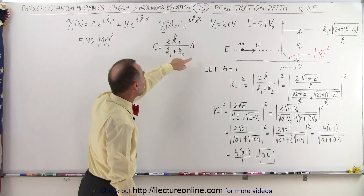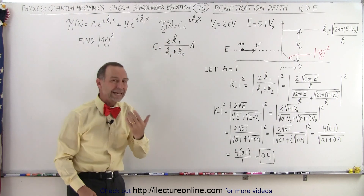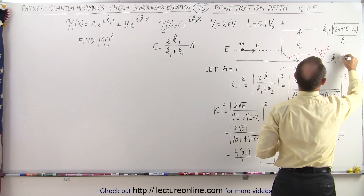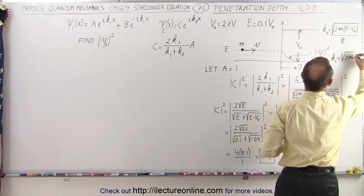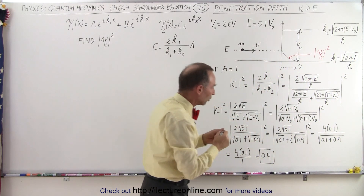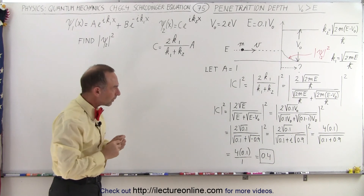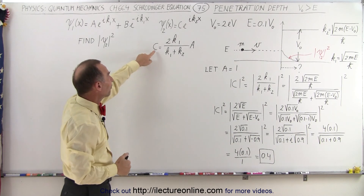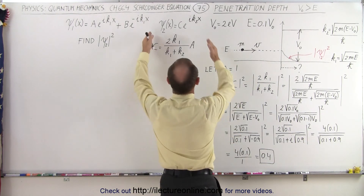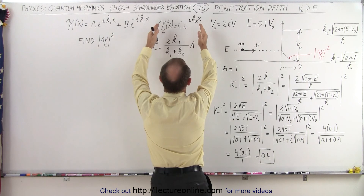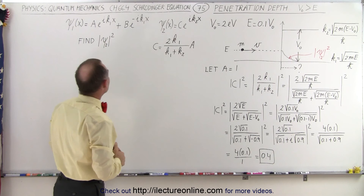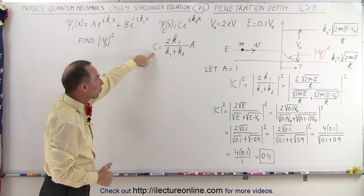We have C in terms of A relative to k₁ and k₂, where k₁ is equal to the square root of 2 times the mass times the energy of the particle divided by h-bar, and k₂ is equal to that equation. Now we need to find what the value of the magnitude of C squared will be, because we're going to take the wave function, find the magnitude, and square it. We need to find that value — essentially we're looking for C squared.